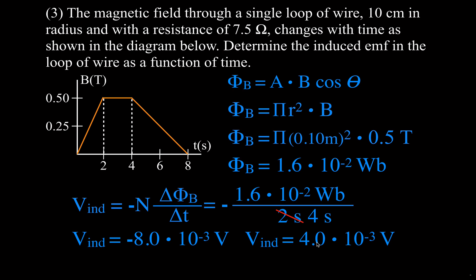So we have: induced voltage during the first 2 seconds, no voltage from 2 to 4 seconds, then induced voltage again. You can see the last section occurs over twice the time, so the induced voltage magnitude is just half. The magnitude of the voltage is half because it takes twice as long.